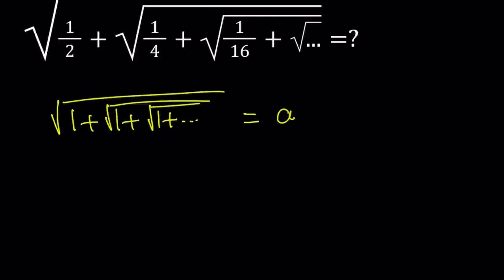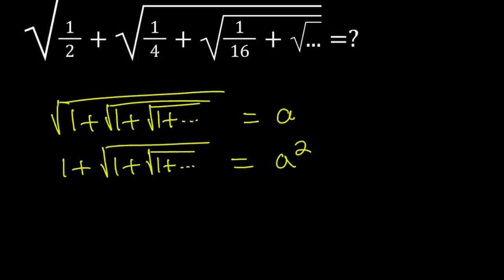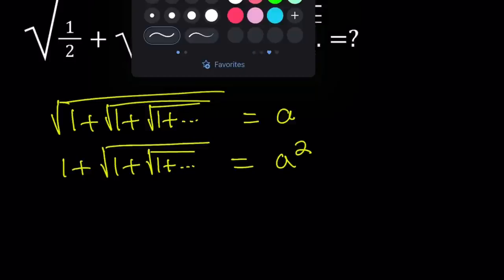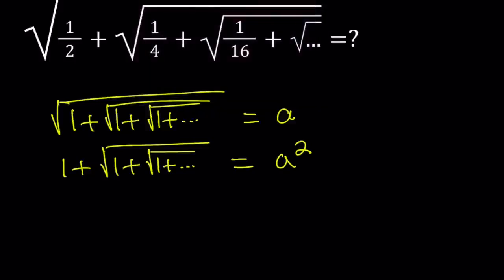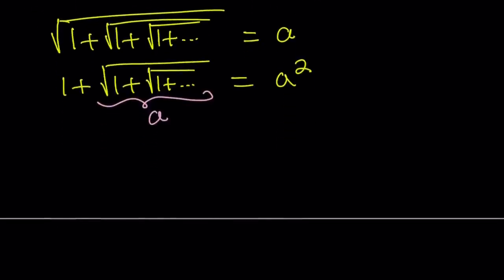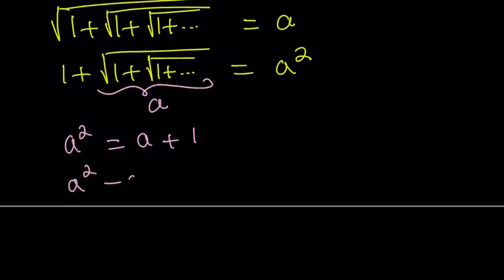And then we're going to square both sides. The outer radical is going to disappear, and we end up with 1 plus the square root of 1 plus the square root of 1 plus dot dot dot equals a squared. Notice that after squaring both sides, this part is the same as a again. So we get a quadratic equation: a squared equals a plus 1.